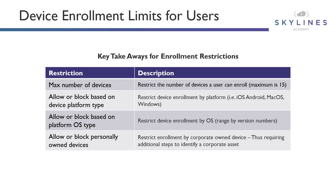If your organization only allows iOS, Android, Windows, or macOS, this is where you specify that allow or block list based on platform type. You can also allow or block based on platform operating system version, which lets you get more granular — for example, supporting Windows 10 but not allowing Windows 7.